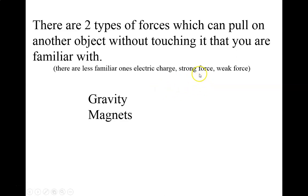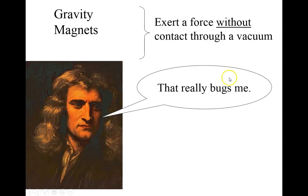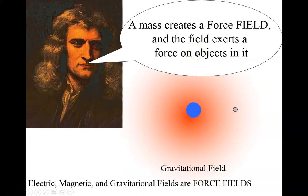The strong nuclear force and the weak nuclear force you're probably less familiar with, but those also do that. So Newton kind of was bothered with this idea that these things like gravity, between masses and magnets could pull on another object without touching it, even through a vacuum. Very strange to him. So he came up with this idea of a field, for example, a gravitational field. And you've probably heard of this before.